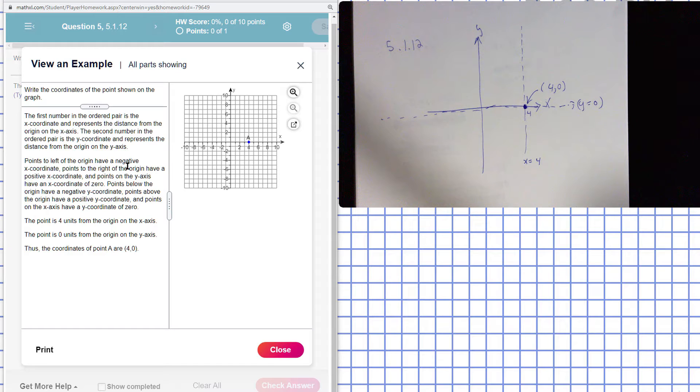Points to the left of the origin have a negative x-coordinate. Points to the right have a positive x-coordinate. So one way you can think of this is that the x-axis has the properties of a number line, positive on one side and negative on the other.